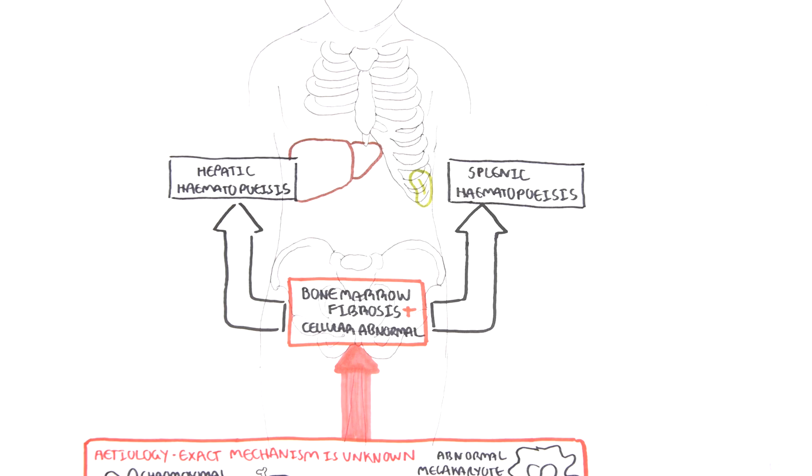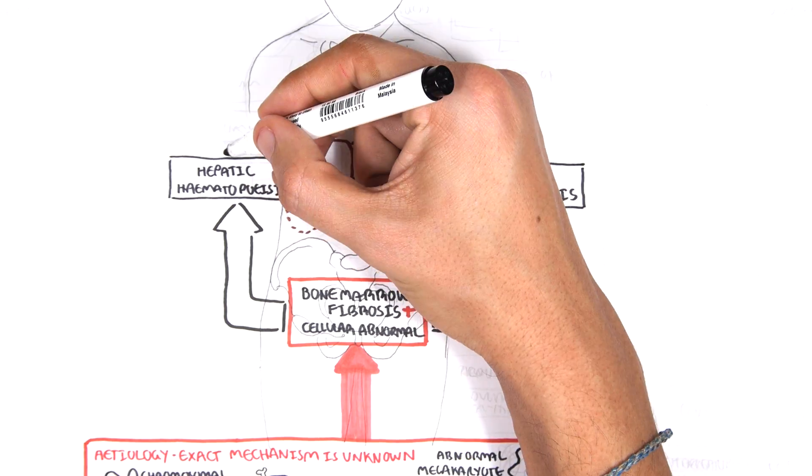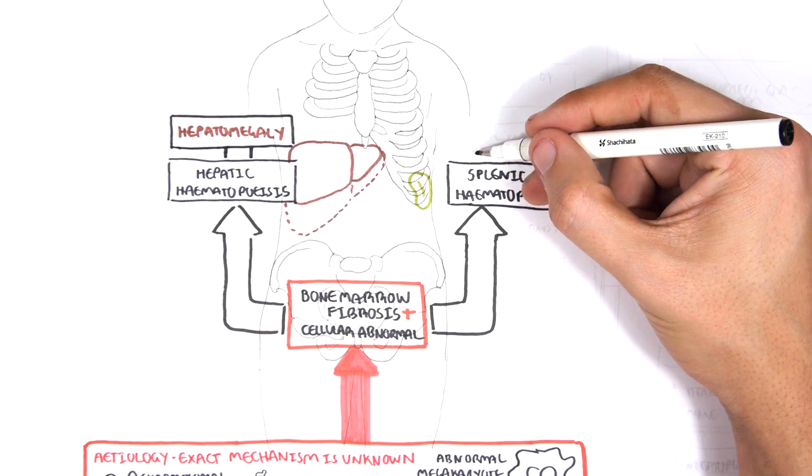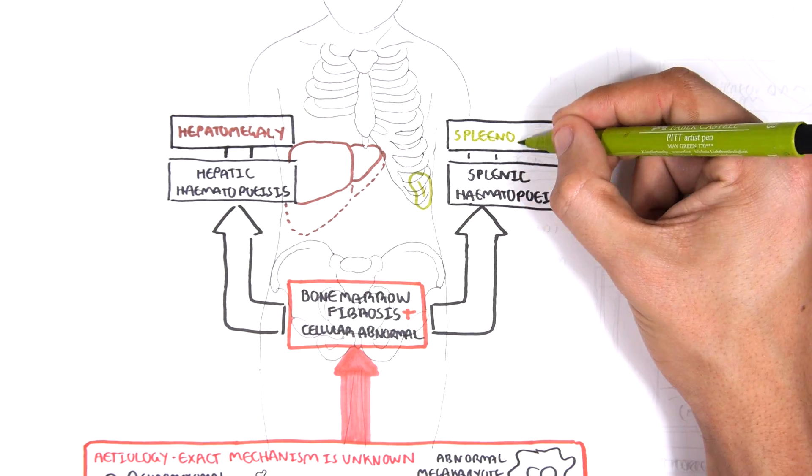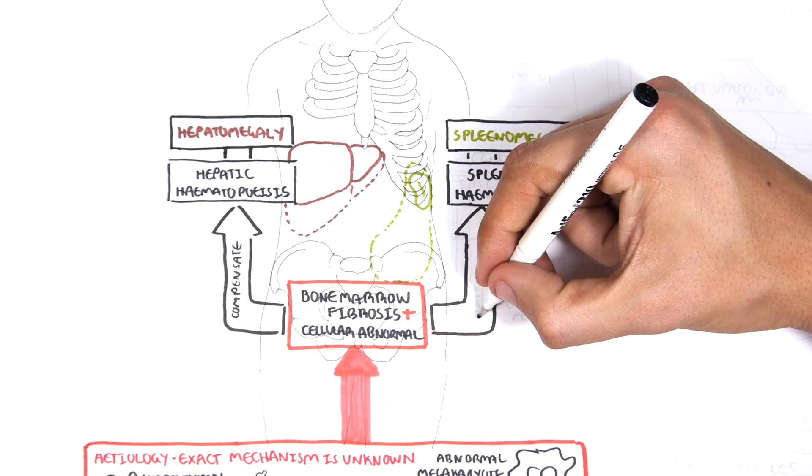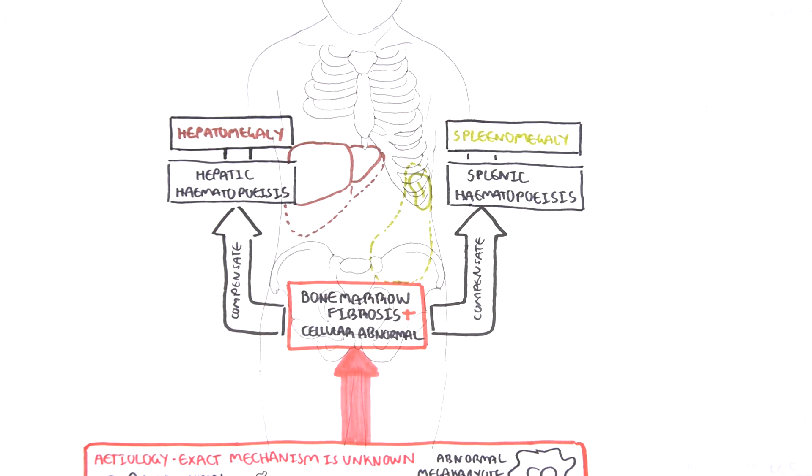As a result of hepatic hematopoiesis, you get hepatomegaly. Similarly, as a result of splenic hematopoiesis, you get splenomegaly. The liver and spleen are essentially compensating for the fibrotic bone marrow. Again, as a consequence of myelofibrosis, hematopoietic stem cells may migrate to the liver and spleen.